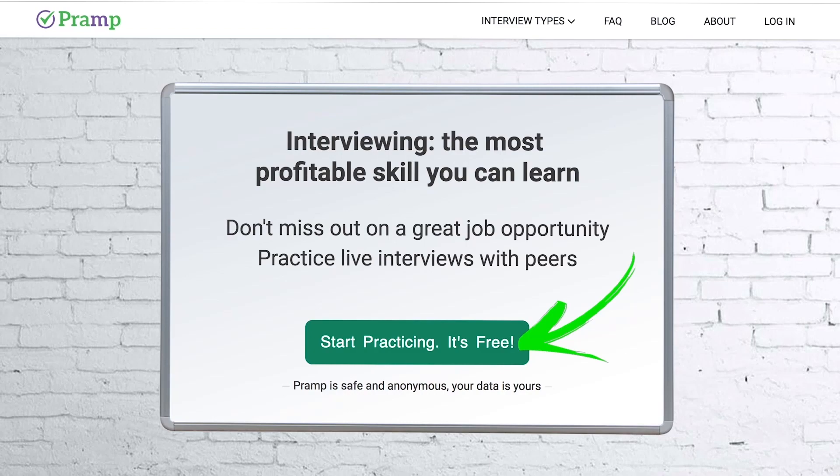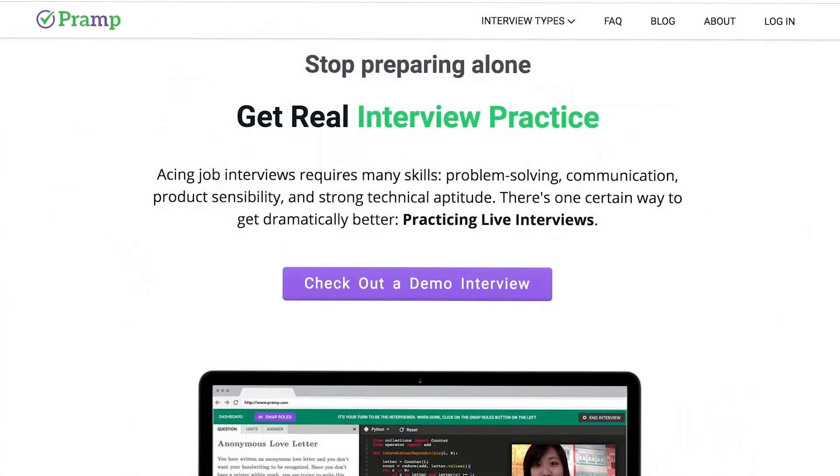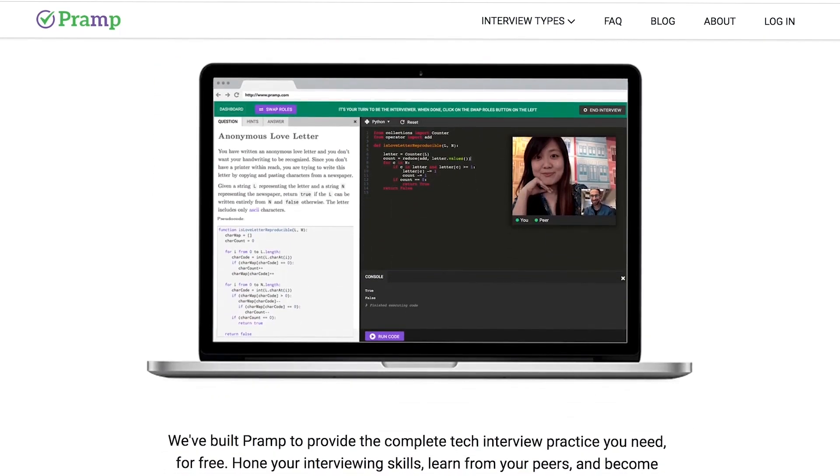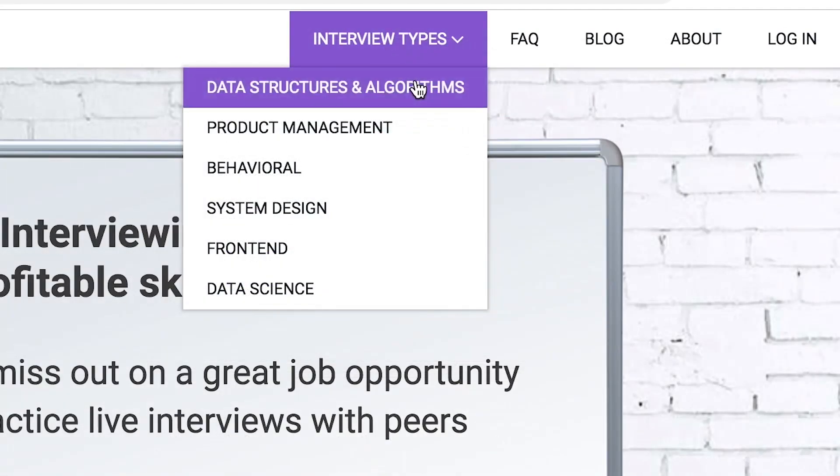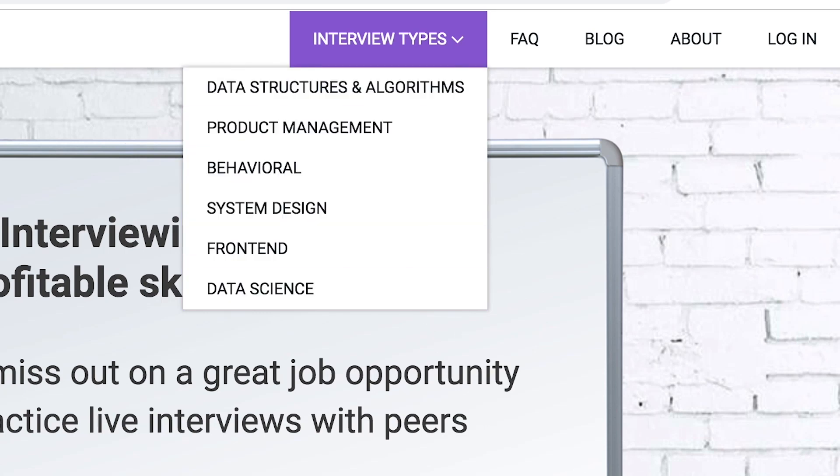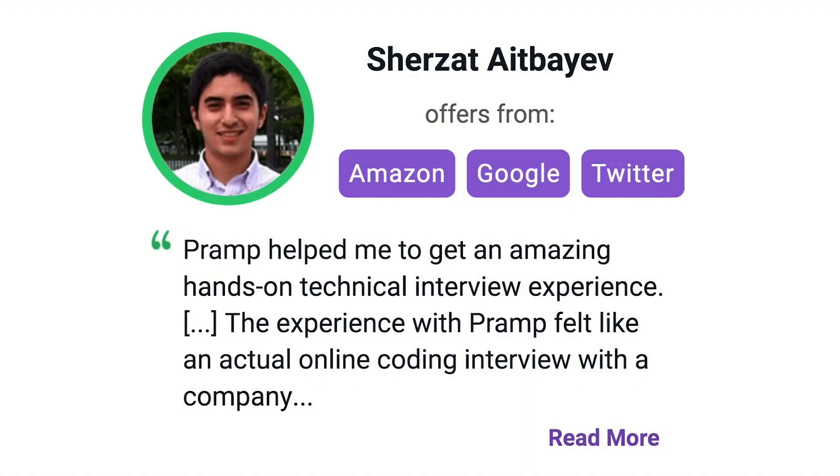Pramp is a free mock interview platform where you can develop your technical interviewing skills. Practice coding with live execution of all major programming languages to solve real interview questions. Interview types include data structures and algorithms, product management, behavioral interviews, system design, front-end, and data science. I've personally used this service to successfully crash course for a software engineering interview. Lots of people are having success getting positions at companies like Amazon, Google, Twitter, and more. Check it out, I'll leave a link for you guys in the description.